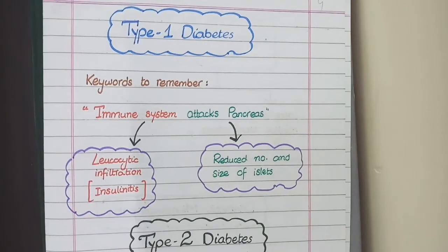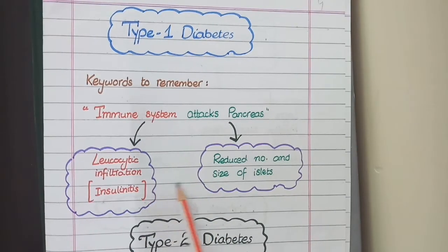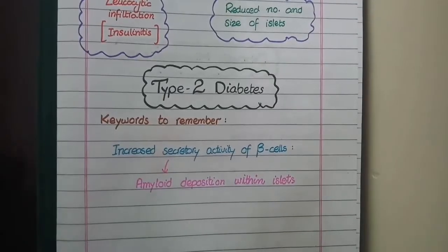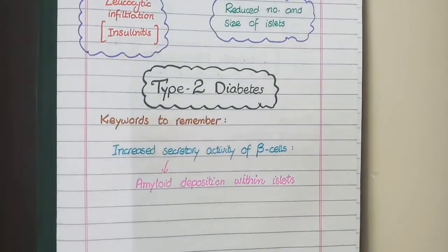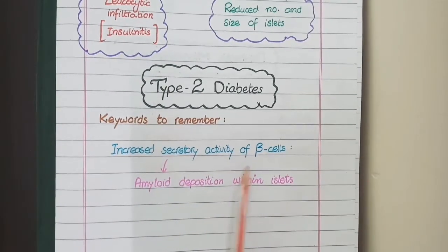As the pancreas is being attacked, its endocrine part — in the form of islets — is reduced in size as well as number. So overall in microscopy, you see leukocyte infiltration and a reduced number and size of islets. Now for Type 2 diabetes, the keywords to remember are increased secretory activity of beta cells.